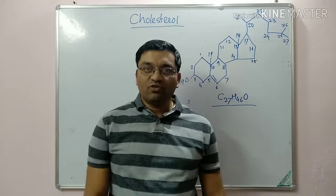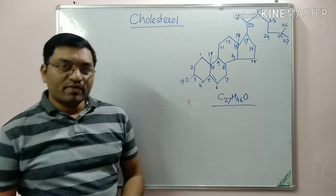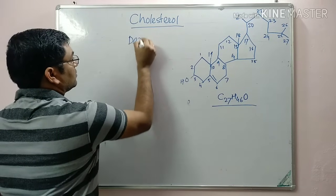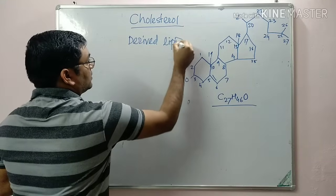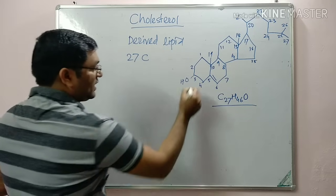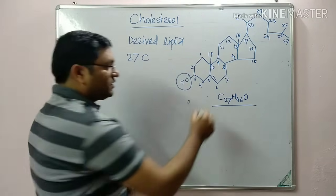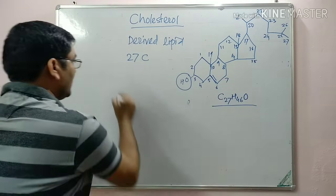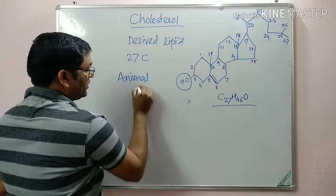Good morning friends. Today we will discuss cholesterol, coming to the chemistry part of cholesterol. It is a derived lipid, a 27-carbon compound. It has a hydroxyl group at the third position and there is a double bond between carbon fifth and sixth. So it is an animal sterol or animal steroid.